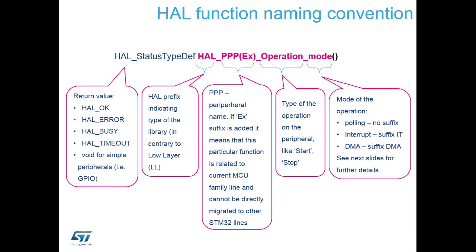The command structure of the HAL libraries starts with a return value if appropriate, then every command starts with HAL — or LL if you want to use low layer libraries. Then it's underscore PPP, where PPP is the peripheral name: TIM, ADC, UART, etc. Then underscore operation, which will be start or stop, and then underscore mode, which is one of the application modes: polling, interrupt, or DMA.